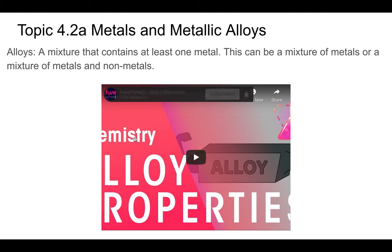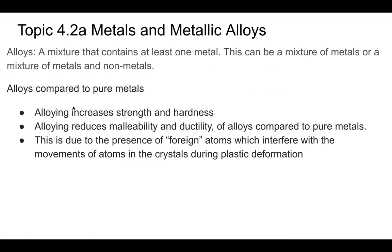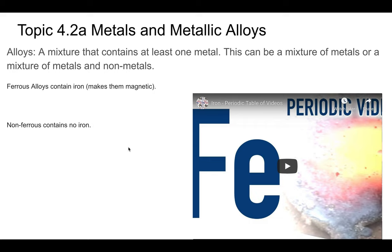Pay attention to that part because it's an important reason why alloys are strong. Alloys increase the strength and hardness of metals compared to pure metals. By doing that, they also reduce malleability — the ability to change form — and ductility — the ability to be drawn into a wire. This is because of the presence of foreign atoms. For example, in bronze, which is a mixture of copper and tin, the tin atoms interfere with the movement of atoms in the crystals.